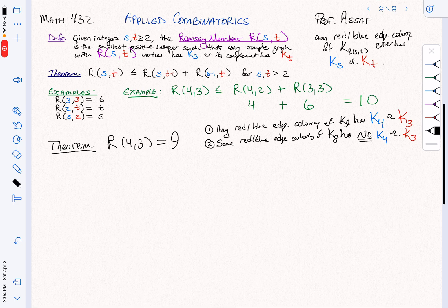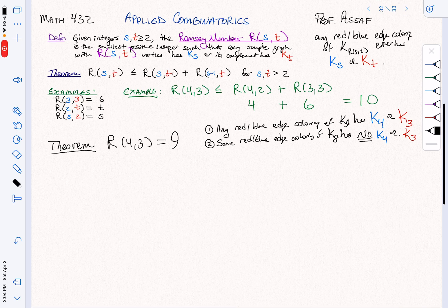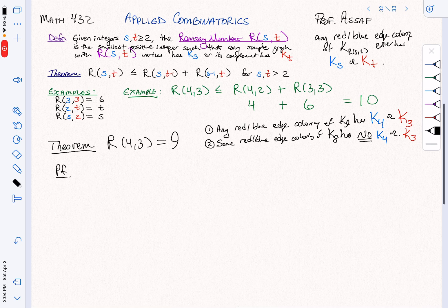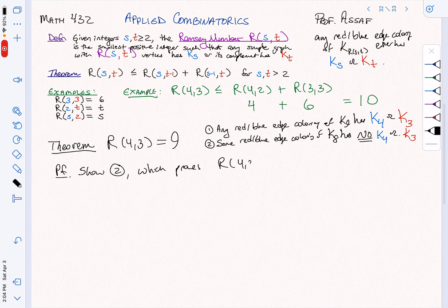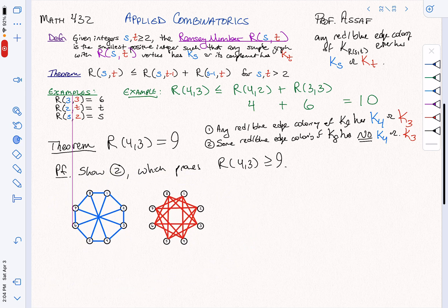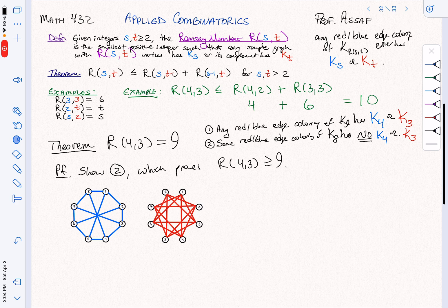I'm going to do step two first. These are the two things we have to do. Let's show step 2, which again proves that R(4,3) is at least 9. What's the proof? Well, here. If you stack these guys up together, you're going to get the complete graph K8.